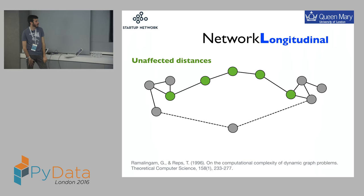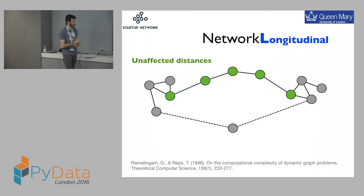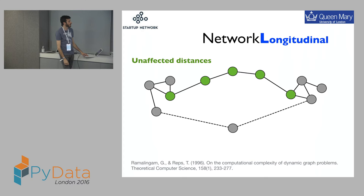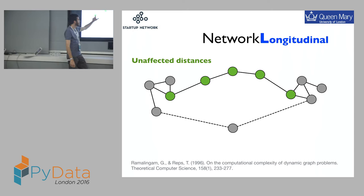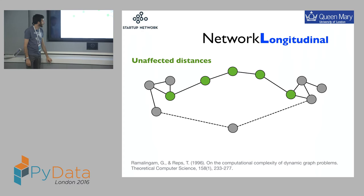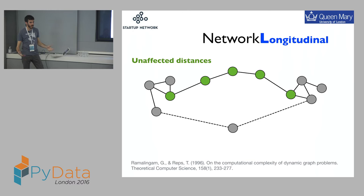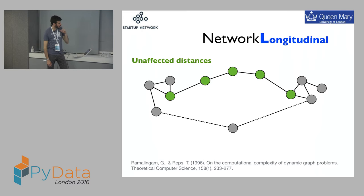This is not something new. You can build algorithms that update only the distances which actually change after the introduction of new edges, and avoid recomputing distances that don't change — like from this node to this node, distance 1, 2, 3, 4 — that distance doesn't change, so why recompute it? It's just a waste of computational power and time. Ramalingam and Reps from Microsoft Research did a nice paper in 1996 called 'On the Computational Complexity of Dynamic Graph Problems.' The dynamics here is the evolution in time. This algorithm needs to store, at any point in time, all the distances between any two nodes.